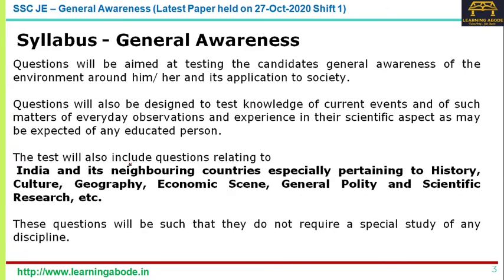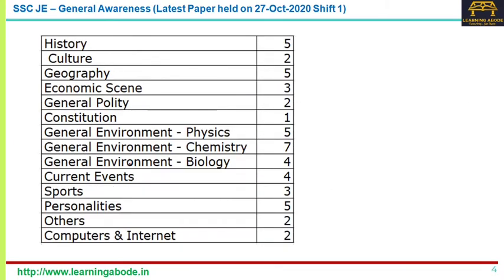This is what is said in the official notification about the general awareness part — wherever required, please pause the video to look into the details. It covers the environment around us: history, culture, geography, economic scene, and so on. The 50 questions in this paper I have classified into topics. You can expect more questions from history, geography, physics, chemistry, biology, sports, personalities, and cultural events. Pause the video here to look at the details.